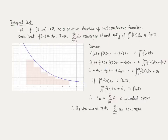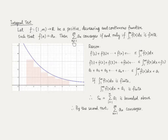Let us introduce the integral test. It says that let f, a function mapping from a half-open interval to the real numbers, be a positive, decreasing, and continuous function such that f(n) equals a_n. Then this series converges if and only if the integral of f from x equals 1 to infinity is finite. In other words, if the integral is finite the series converges; if the integral is not finite the series diverges. So we can calculate the integral to conclude whether or not a series converges.